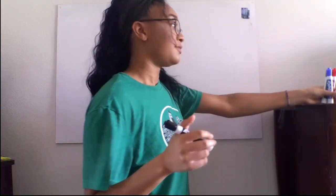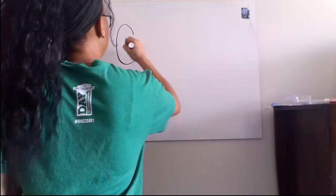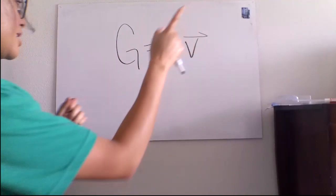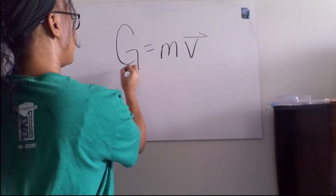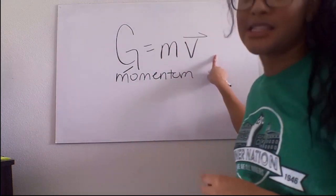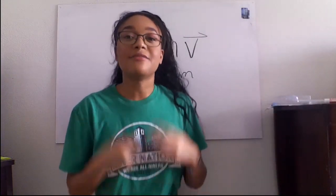So what is momentum? I got some new markers so you guys should be able to see much better, and I cleaned my board. So, momentum is G equals MV. G equals MV. This is momentum right here. The M stands for mass, and the V stands for velocity, and this little squiggly arrow on top just means vector.